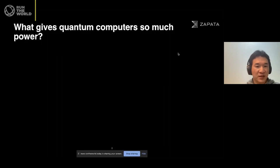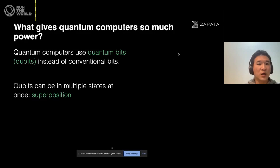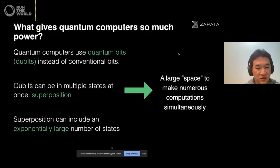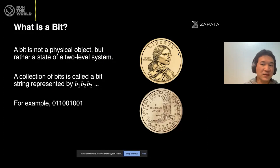So what gives quantum computers so much power? We understand the difference in everything, but quantum computers use qubits, and qubits can be in multiple states at once — this is called superposition. Superposition can include entanglement, and also quantum interference. Those properties of a quantum qubit and quantum state make those things possible.